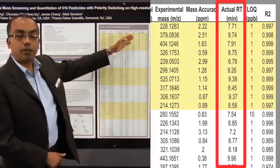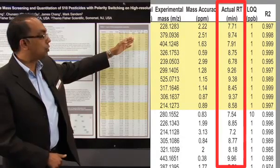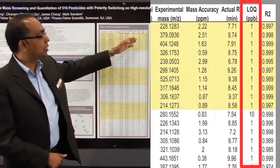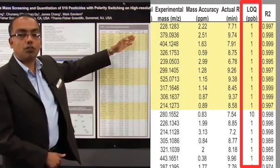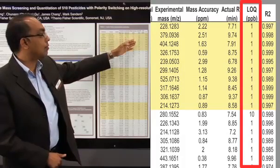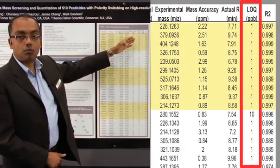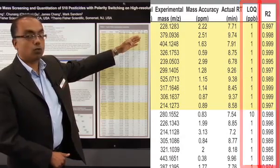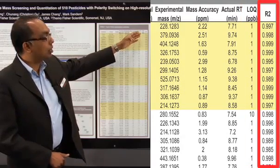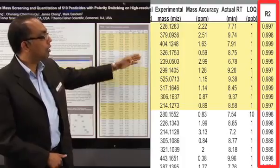We have given the retention time for each of these compounds. In addition, the LOQ — the limit of quantitation — for each of these is given, which ranges around 1 ppb, half a ppb, as well as the quant statistics; only the R-squared values are shown here.